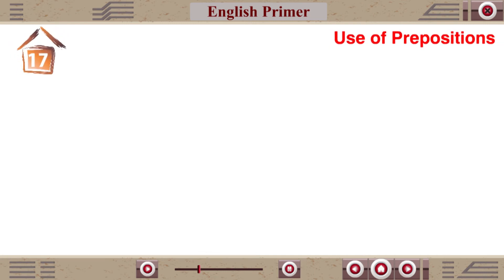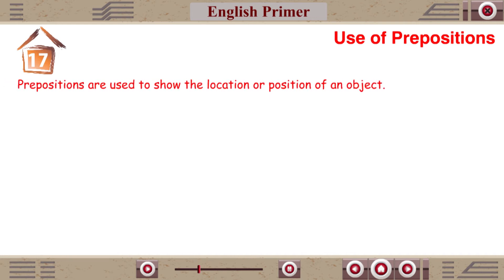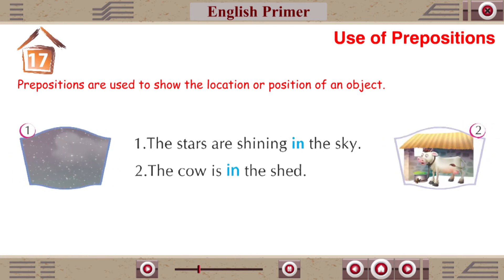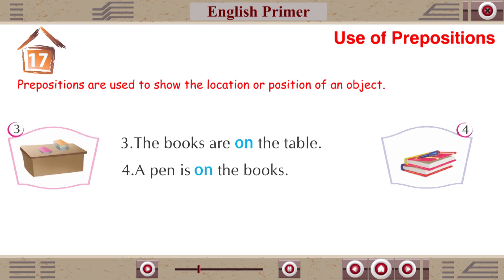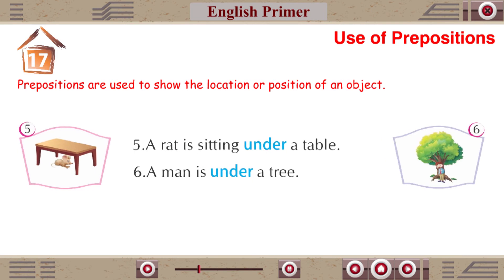Chapter 17: Use of Prepositions. Prepositions are used to show the location or position of an object. 1. The stars are shining in the sky. 2. The cow is in the shed. 3. The books are on the table. 4. A pen is on the books. 5. A rat is sitting under a table. 6. A man is under a tree.